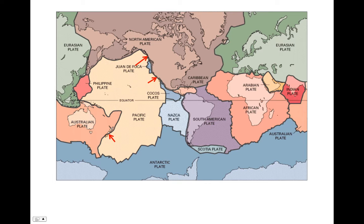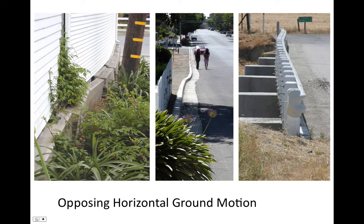Transform plate boundaries are those in which the plates move alongside one another. For example, at the San Andreas Fault, the North American plate is moving one way and the Pacific plate is moving the other way. Some notable attributes of transform plate boundaries are that they do not exhibit volcanism — there's no volcanism at this type of plate boundary. There are large earthquakes along transform plate boundaries, as anyone who's lived in California knows. And they're usually pretty short — the San Andreas is one of the longest transform plate boundaries on the planet currently. We have opposing horizontal motion, which we can see in the offset of roads, the foundation of a house, and bridges built along transform plate boundaries.